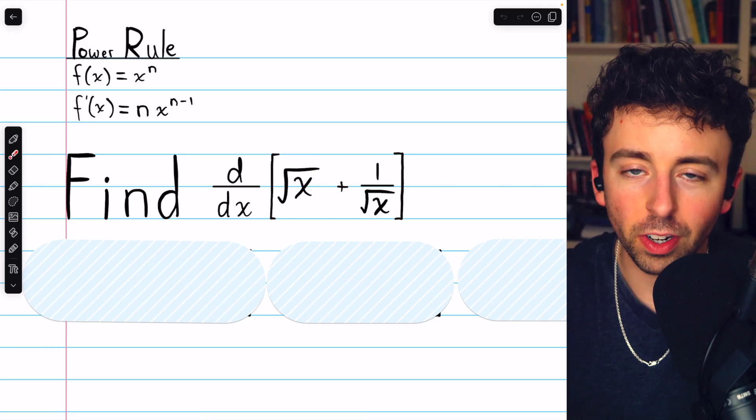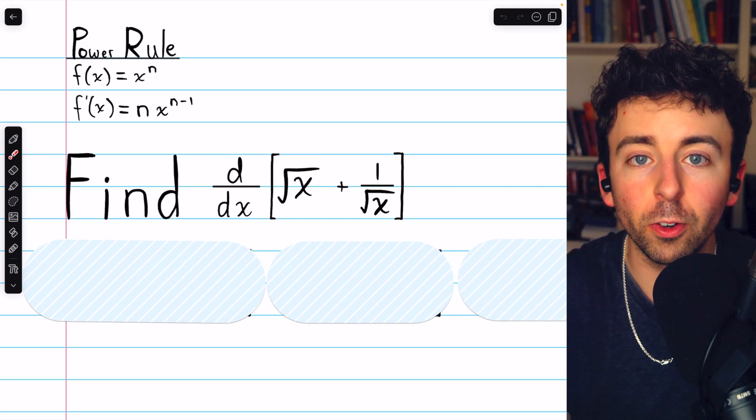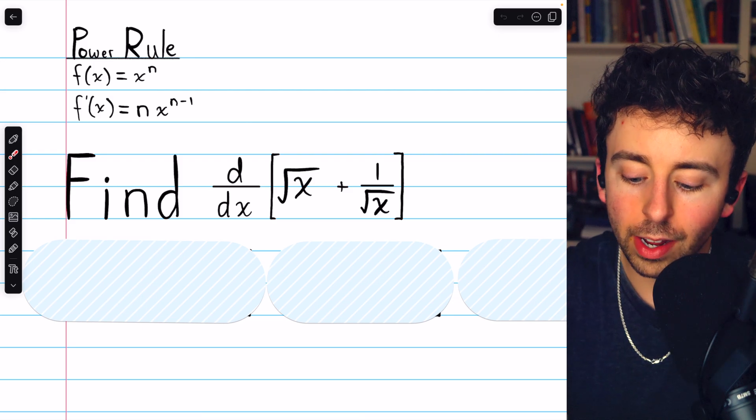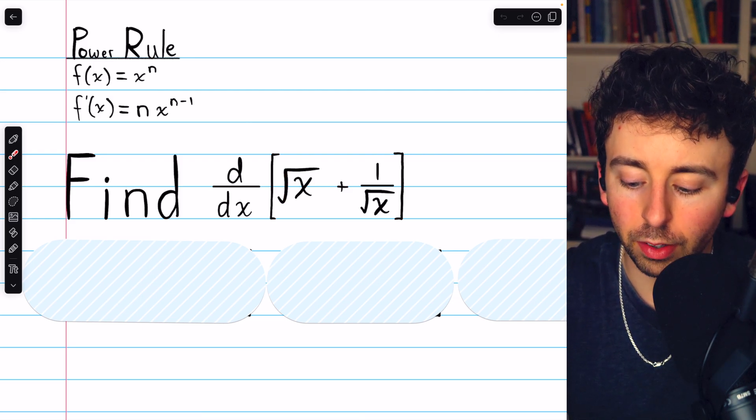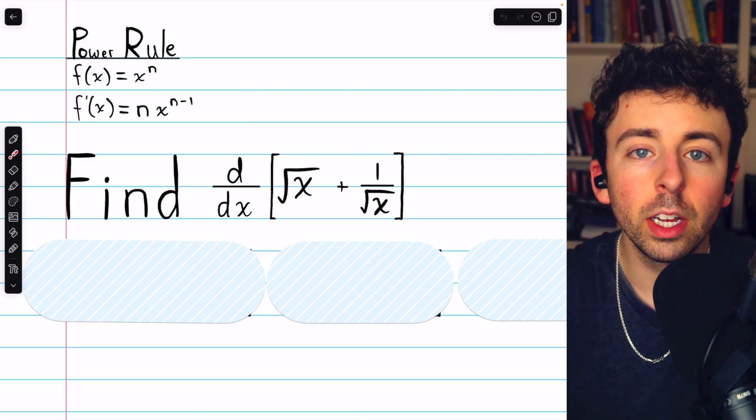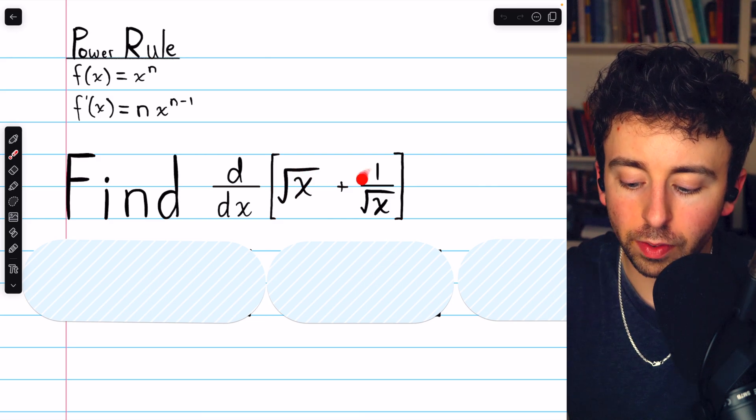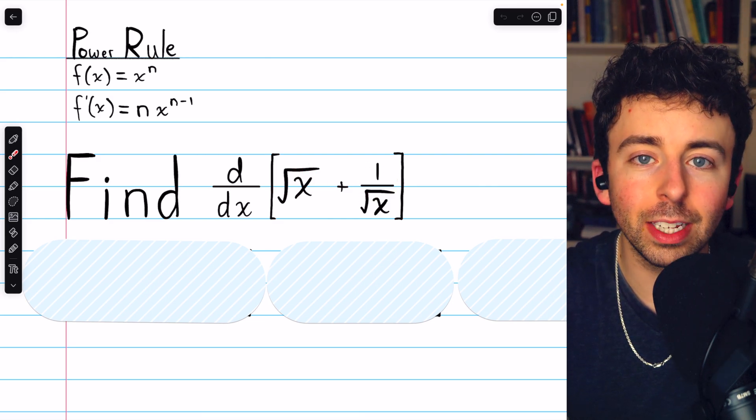The derivative of a sum of functions is just the sum of the function's derivatives. So, to find the derivative of the square root of x plus 1 over the square root of x, we'll just have to take the derivative of each of these things separately and add those together.